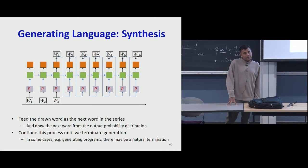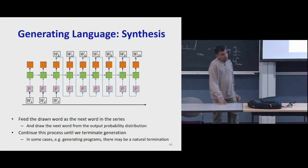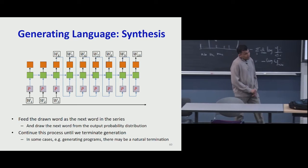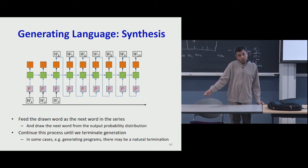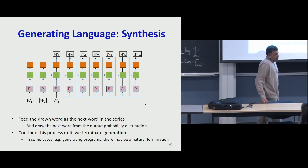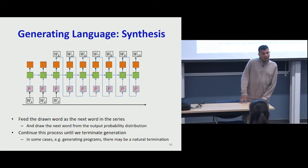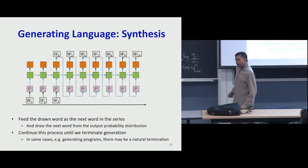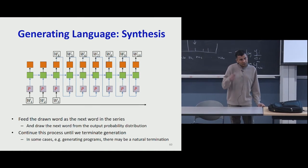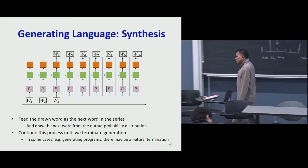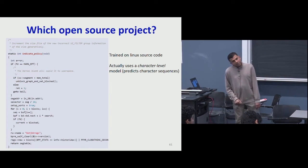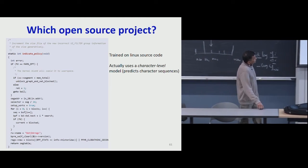That process continues to produce the next word, and so on until all the way to the end. You can keep generating this sequence of words till some termination condition is achieved. You can decide to terminate things randomly, or there might be an explicit termination condition. When generating code, there's a natural termination condition — when the final bracket is closed, your code is over. When generating language sentences, there's a very important end-of-sentence or end-of-passage marker that we often employ. Generation terminates when the model explicitly generates a symbol saying the sentence has ended. This is the technique that was used to produce the code we saw earlier, trained on Linux source code, using a character-level model.